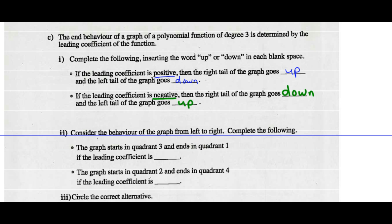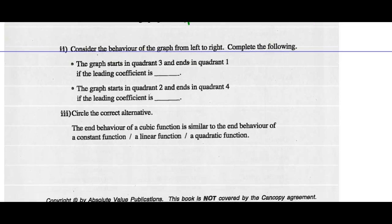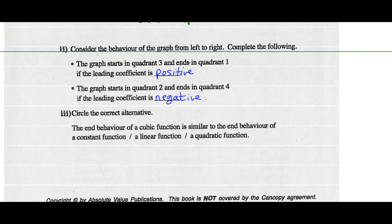If the leading coefficient is positive, the right tail goes up and the left tail goes down. The graph starts in quadrant 3 and ends in quadrant 1. If the leading coefficient is negative, the right tail goes down and the left tail goes up — starting in quadrant 2 and ending in quadrant 4. The end behavior of a cubic function is similar to that of a linear function.